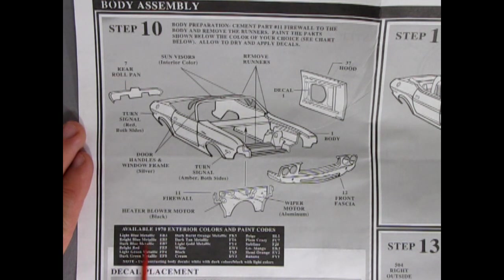EB3, EB5. So light blue metallic. Bright blue metallic. Dark blue metallic. Bright red. Light green metallic. Dark green metallic. Dark burnt orange metallic. Dark tan metallic. Light gold metallic. White black cream. Beige. Plum crazy. Sublime. Go mango. Hemi orange. And banana. Yep banana yellow.